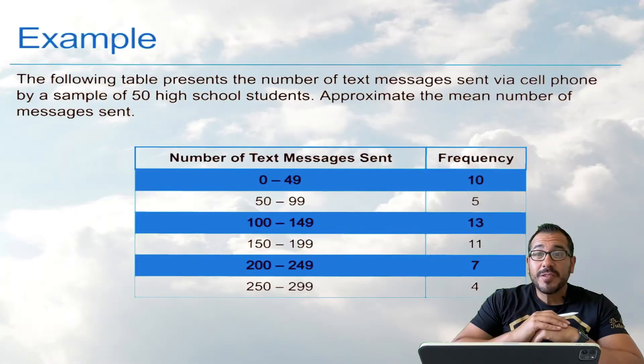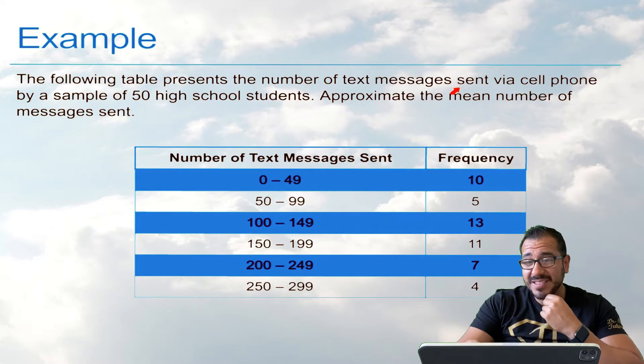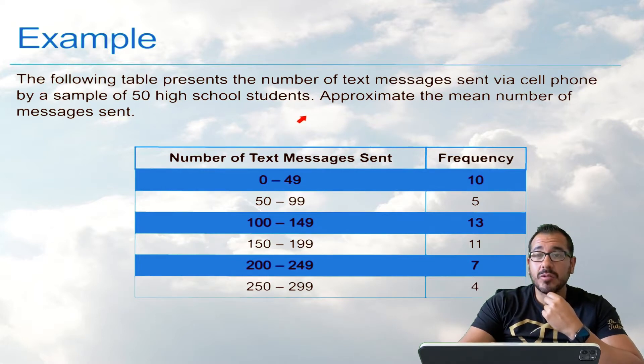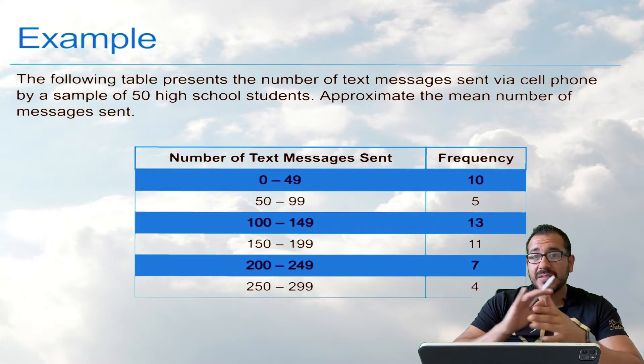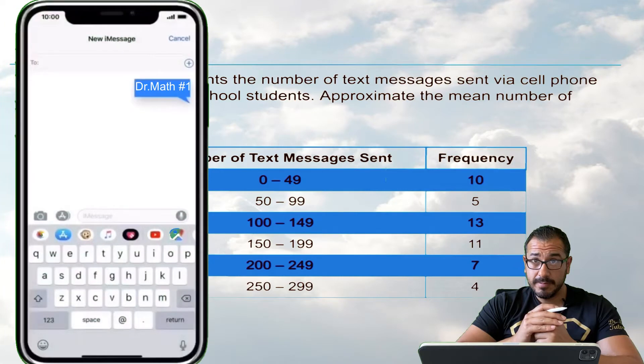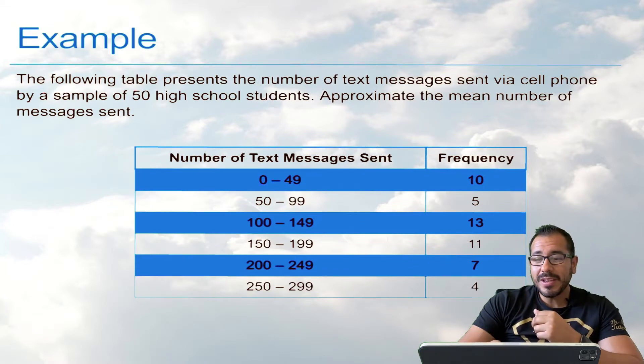All right, so here's our first example. Let's go ahead and read this together. So the following table that we have here presents the number of text messages sent via cell phone by a sample of 50 high school students. All right, so we've got these 50 high school students, and they're sending messages, and we're going to see how much they're blowing up other people's phones. All right, so our goal here is to approximate the mean number of messages sent.